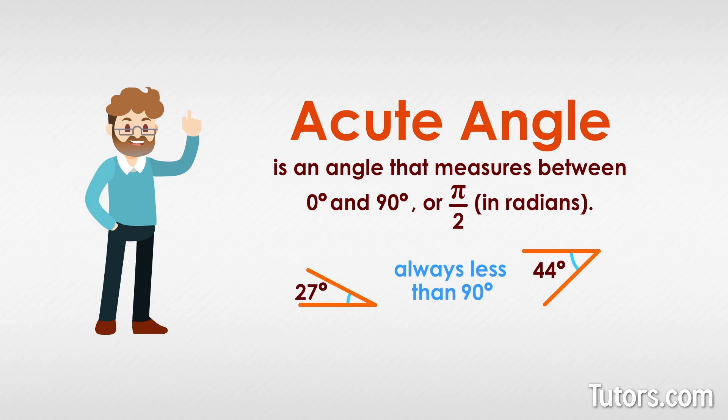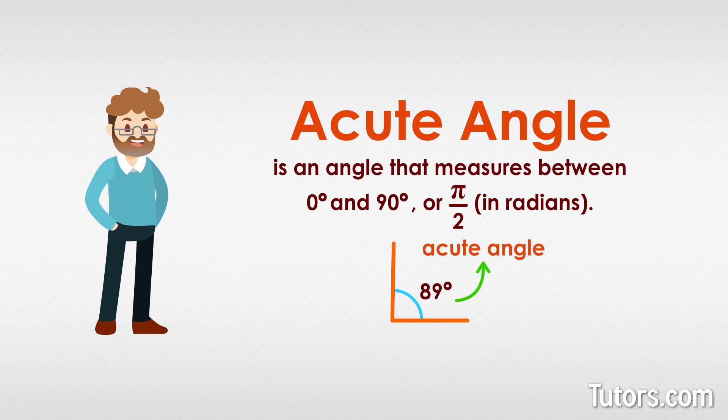Though this angle measuring 89 degrees is only one degree off a right angle, it is still acute. Mathematics prefers precision, so even an 89.9 degree angle cannot be called a right angle - it is an acute angle. Here are some facts about acute angles.